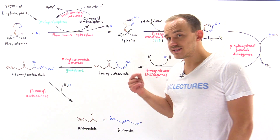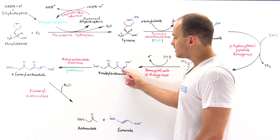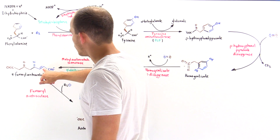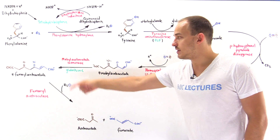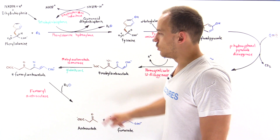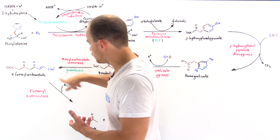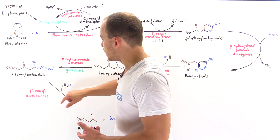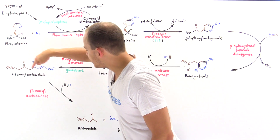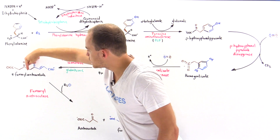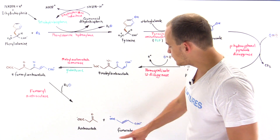In the next step, we isomerize: the cis double bond is converted to a trans double bond. The enzyme maleylacetoacetate isomerase uses the activity of glutathione to form 4-fumarylacetoacetate. In the final step, fumarylacetoacetase cleaves the sigma bond using a water molecule. Upon cleavage, oxygen attaches to one carbon and the other becomes a CH₃, ultimately yielding acetoacetate and fumarate. Acetoacetate can be used to form ketone bodies and fumarate can be used to form glucose.